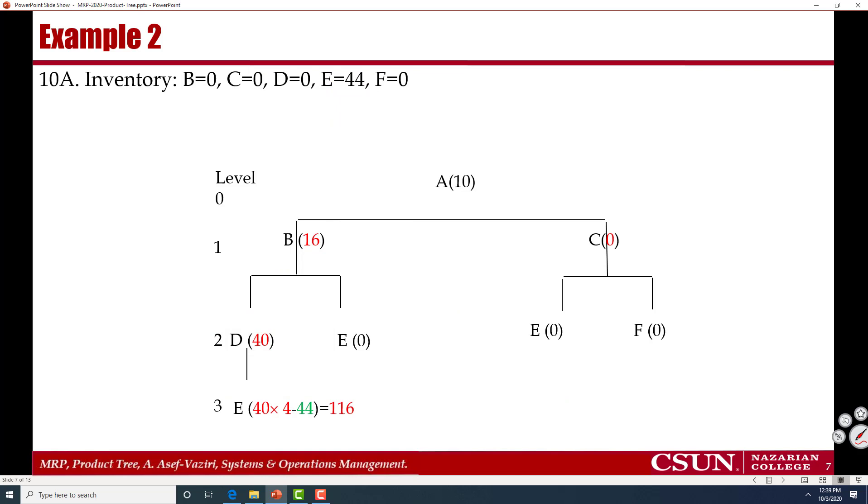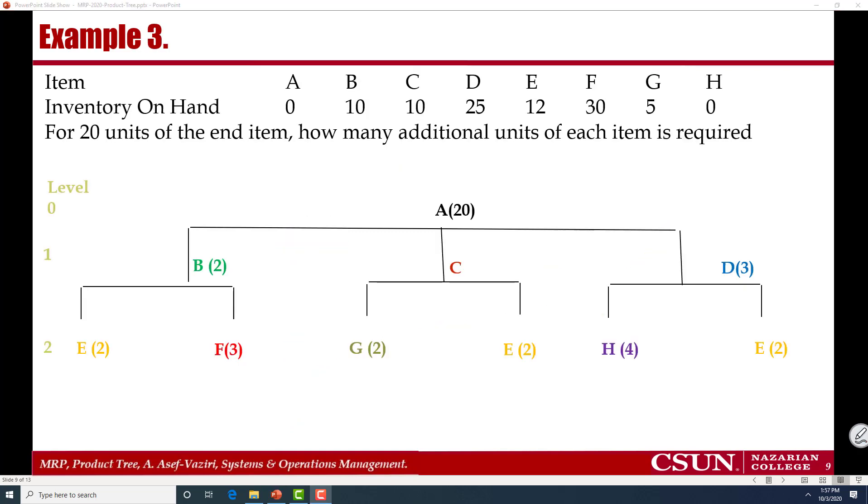What we need of each component to end up with 10 units of A for which we had no inventory. And these are the numbers: 116, 40, 16, and nothing here. Now let's solve this problem.